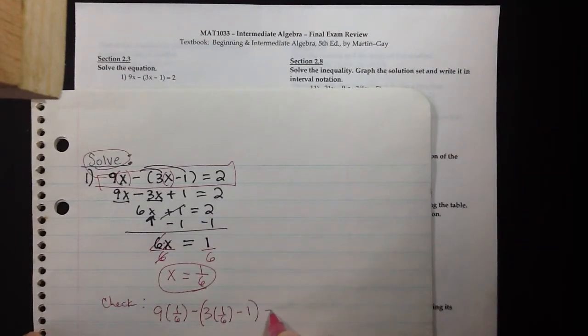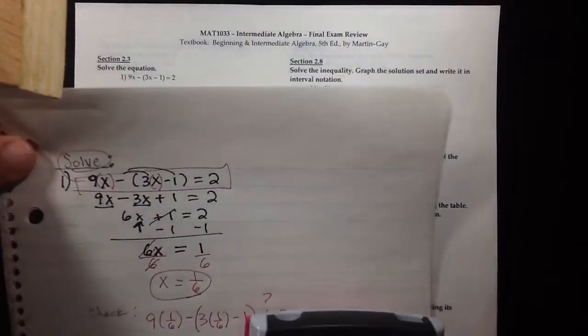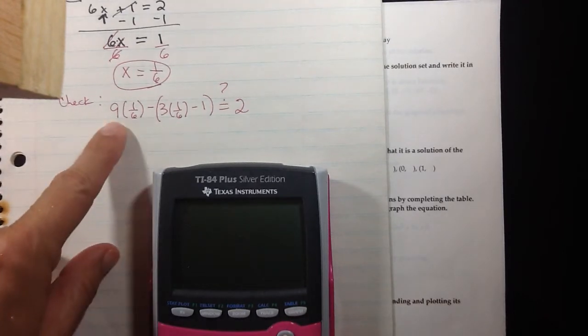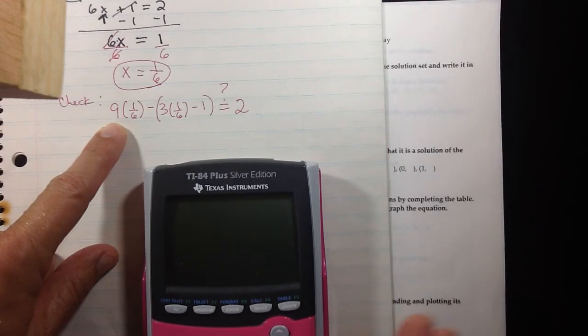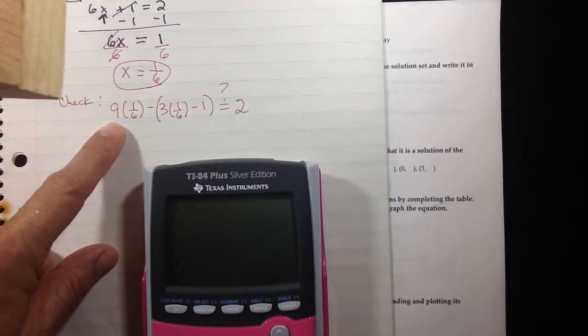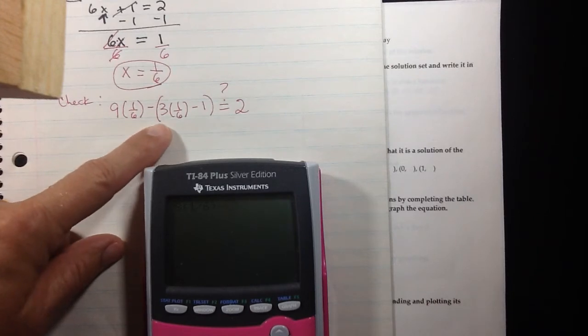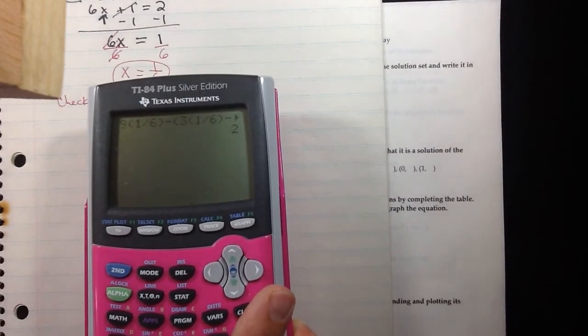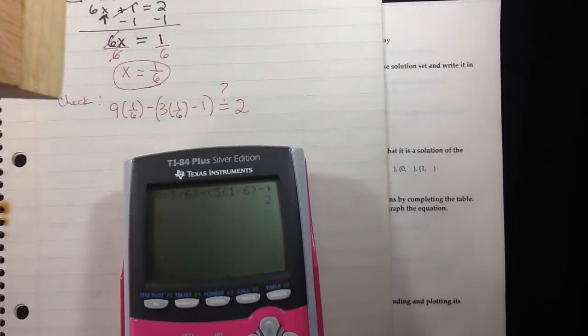If you're tight on time, you can just use your calculator to do the calculation to see if it works. I would just go to my calculation screen, and on the TI-84 you can literally type in what you see: 9(1/6) minus (3(1/6) minus 1), close the parenthesis, and you'll put the left side in to see what that equals. That's 2, and it's supposed to equal 2, so we know we're good.